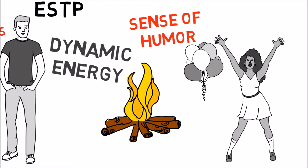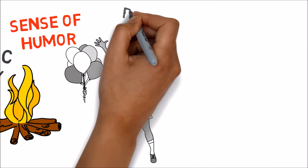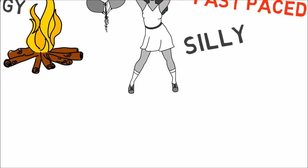They use their keen powers of observation to assess their audience and adapt quickly to keep interactions exciting. Although they typically appear very social, they are rarely sensitive. The ESTP prefers to keep things fast-paced and silly rather than emotional or serious.